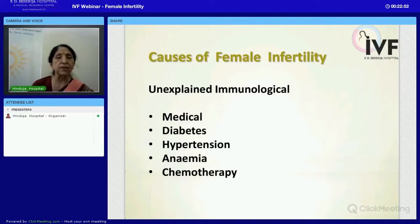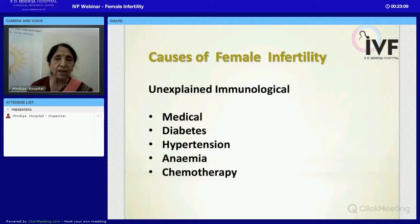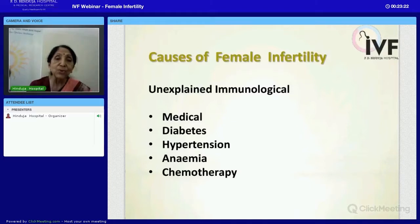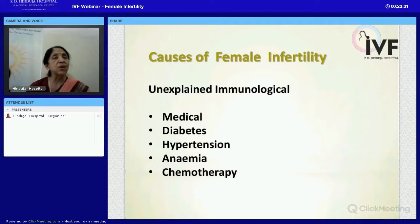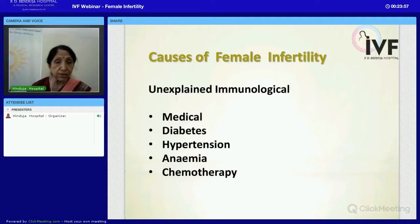An important situation is when all investigations are normal but the woman still has not conceived. The question often asked to the doctor is: why am I not able to conceive? This condition is called unexplained infertility. There are also immunological causes — a woman can develop an immune response or antibodies against the sperm as a foreign body.